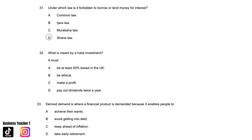Question thirty-two: What is meant by halal investment? It must: A. Be at least 50% based in the UK. B. Be ethical. C. Make a profit. Or D. Pay out dividends twice a year. And the answer is B. Be ethical. Question thirty-three: Derived demand is where a financial product is demanded because it enables people to: A. Achieve their wants. B. Avoid getting into debt. C. Keep ahead of inflation. Or D. Take early retirement. And the answer is A. Achieve their wants.